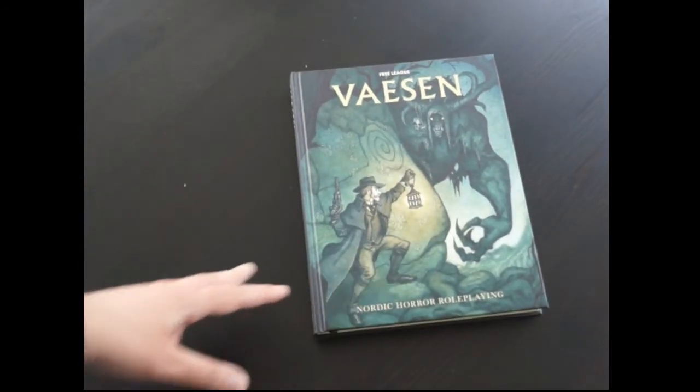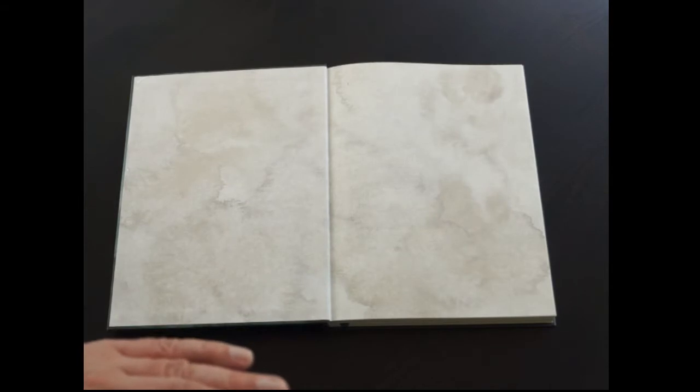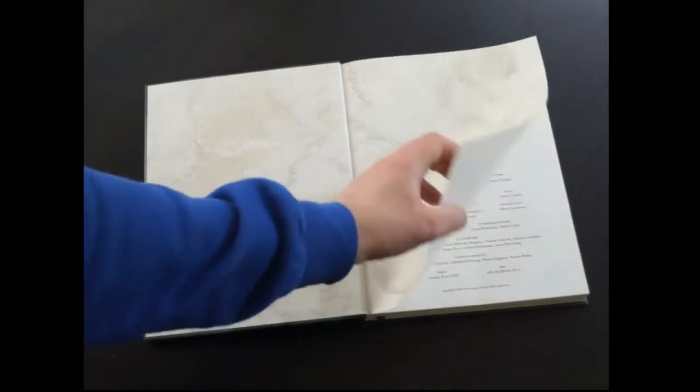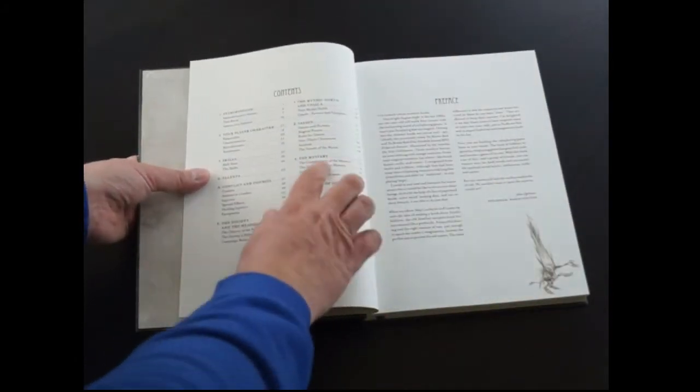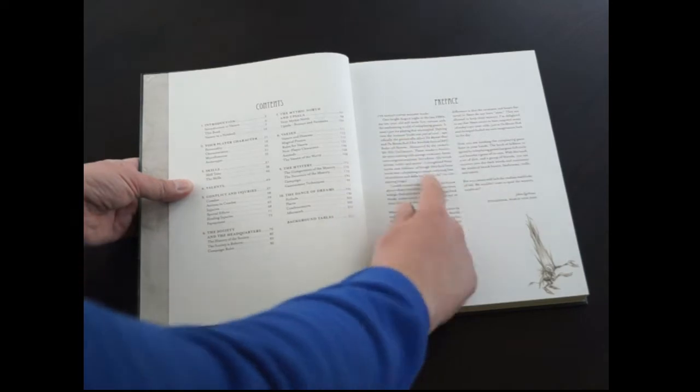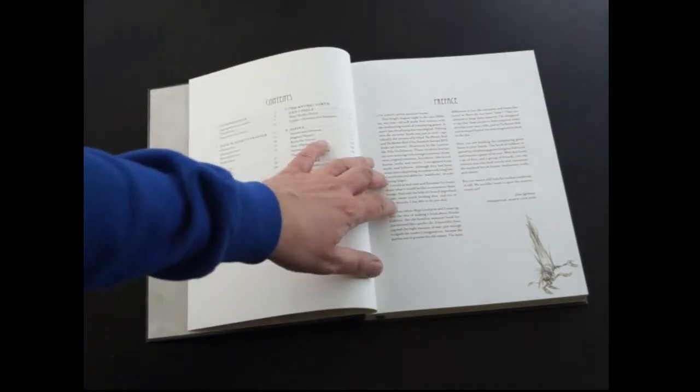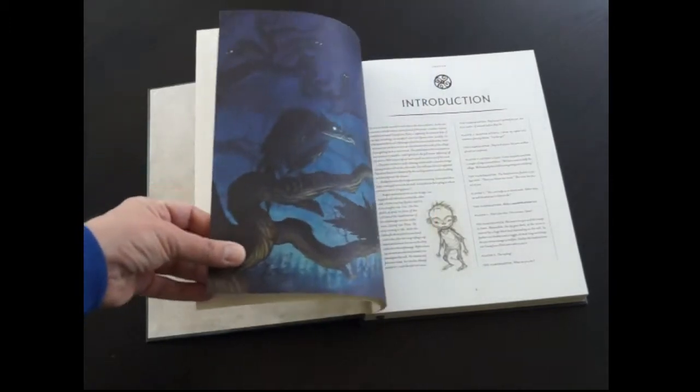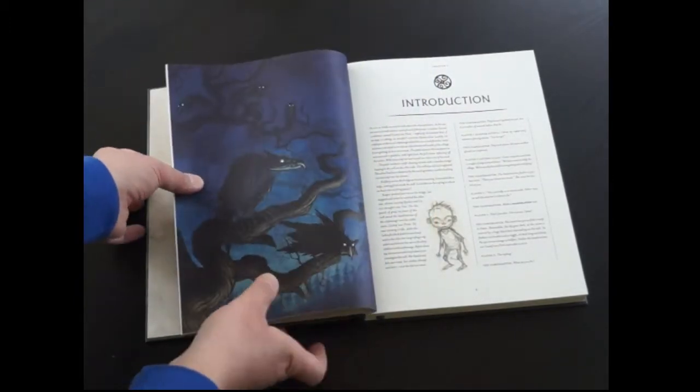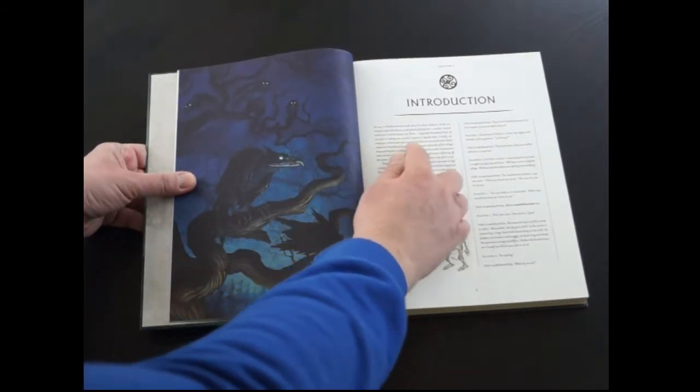Nordic horror role-playing is what this is. I would add in folklore, and there's a real folklore element that makes it all the better. Free League, if you know anything about them, make really good quality books and this is no different. It's so evocative. Looking at the contents - I've always loved monster books, and that says a lot about this book. That's the first sentence proper in it. Look at that, just look at this, it's so gorgeous.